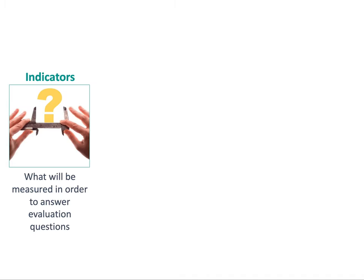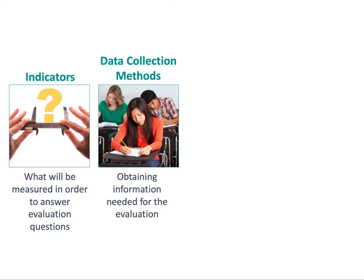So that was a lot, so let's pull those terms apart. Indicators are the specific things you will measure so that you can answer the evaluation questions. Examples of indicators might be number of educators served, students' interest in STEM, or rates of program completion. Data collection is how the information for the evaluation will be obtained. Data collection methods could include surveys, interviews, focus groups, or using existing student or program data.